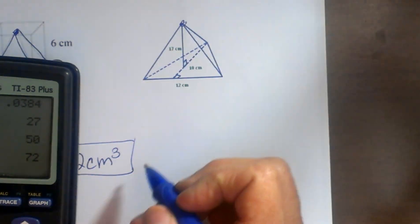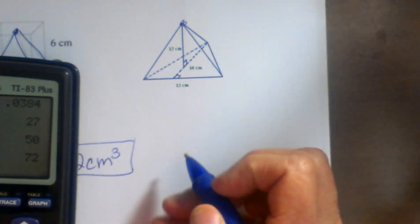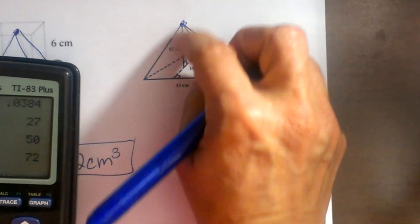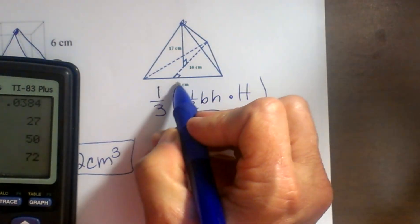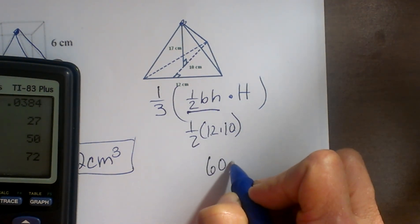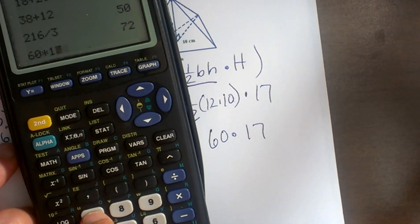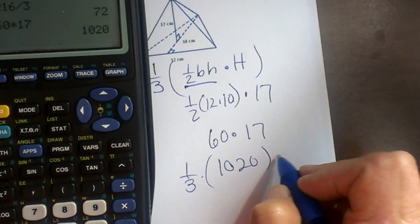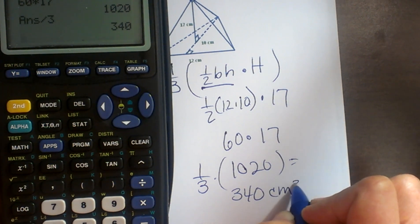The next pyramid has a triangular base. The base is 12 by 10 and the height is 17. The area of the triangular base is one half times 12 times 10: half of 120 is 60. Then 60 times the height of 17 equals 1020. Since it's a pyramid, divide by 3: 1020 divided by 3 equals 340 centimeters cubed.